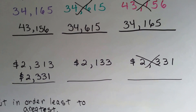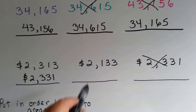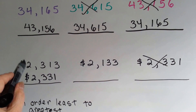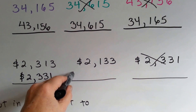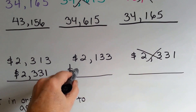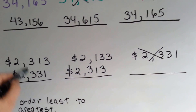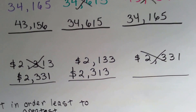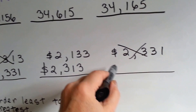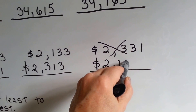So what's the next biggest number? Remember this one only had one hundred and this one had three hundred? So if you said this one, you're right: $2,313. So now that one's done, we know that's the only one left — it's got to be last: $2,133.